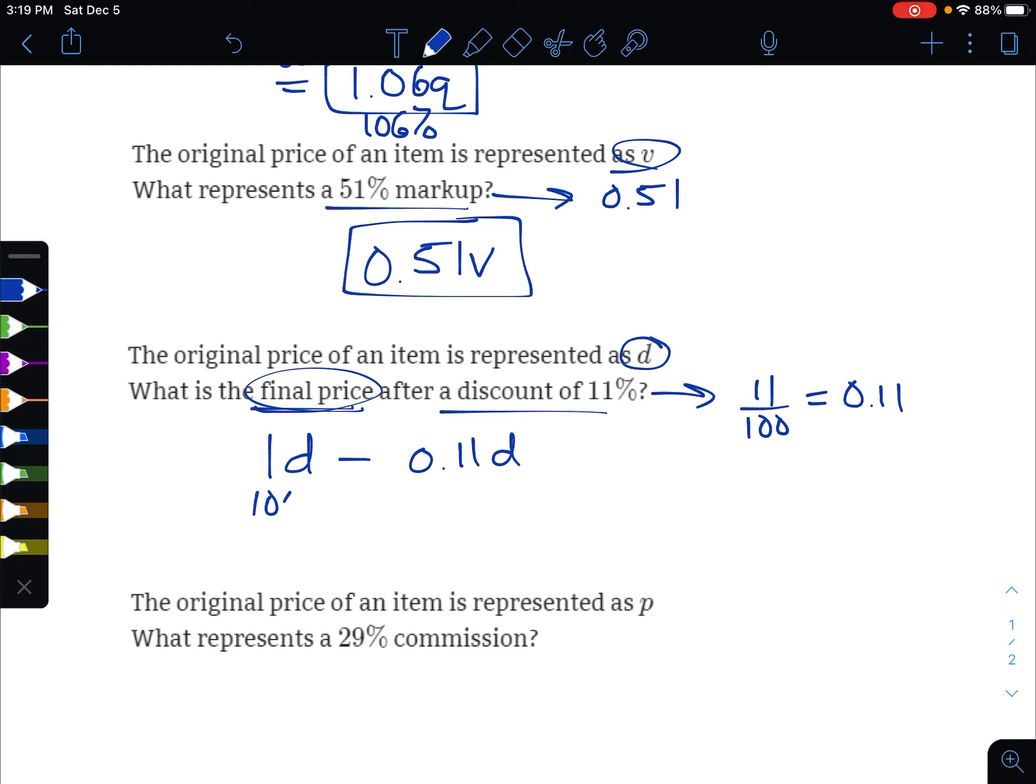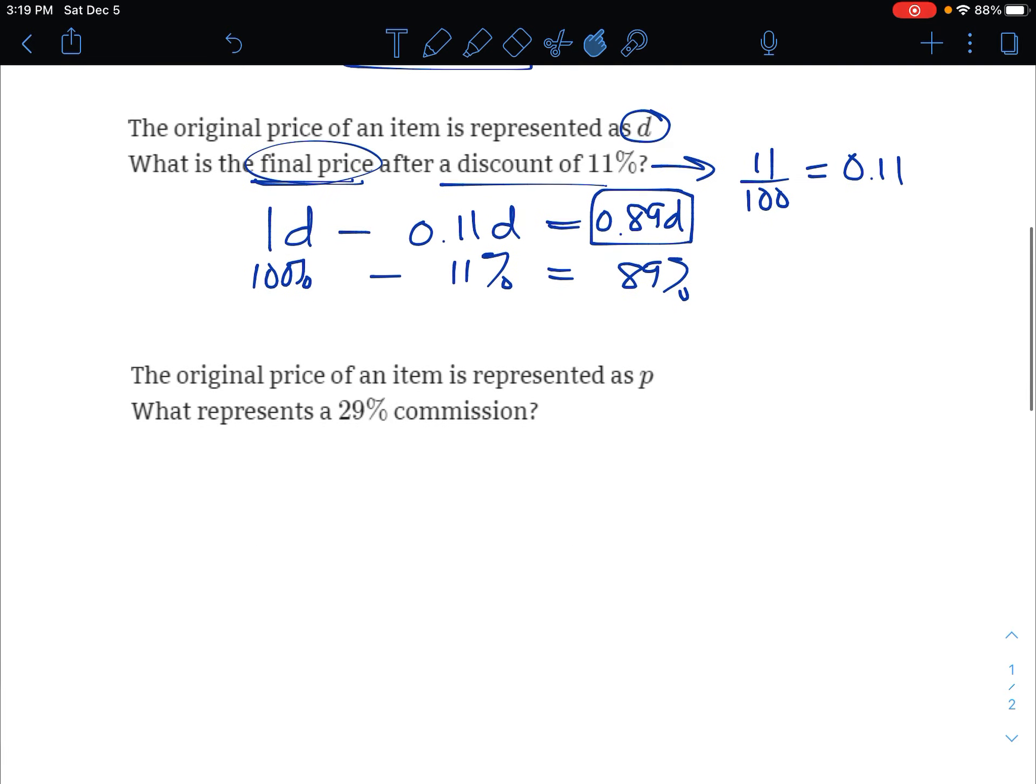Which would be—well, this is 100% taking away 11% really—so we're left with 89%. So it should be 0.89d, which would be the simplified form of that final price.